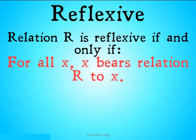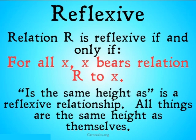Reflexive: relation R is reflexive if and only if, for all X, X bears relation R to itself. 'Is the same height as' is a reflexive relationship — all things are going to be the same height as themselves. This also works for 'is the same weight as' and many other similar relations.